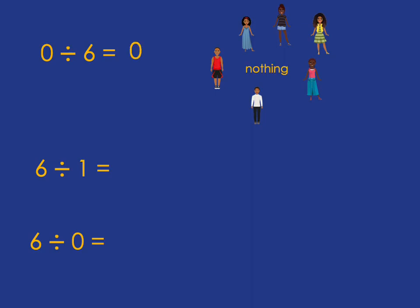On the other hand, if you've got 6 divided by 1, what you've got is 6 cakes, and you've just got 1 person who has to share them. Well, how many cakes is that person going to get? Well, they're going to get all 6 of the cakes.